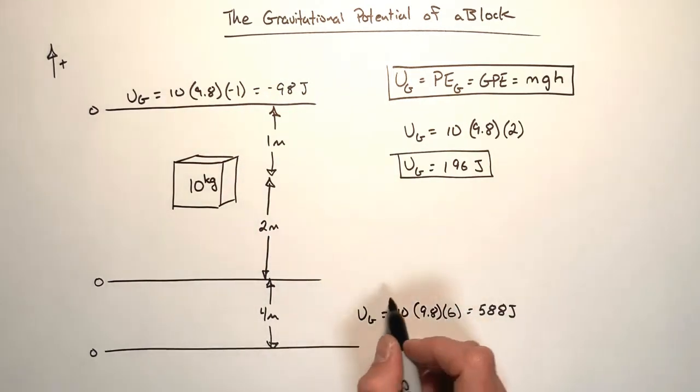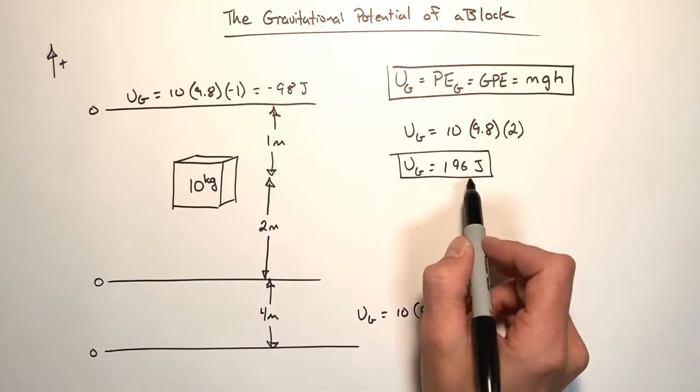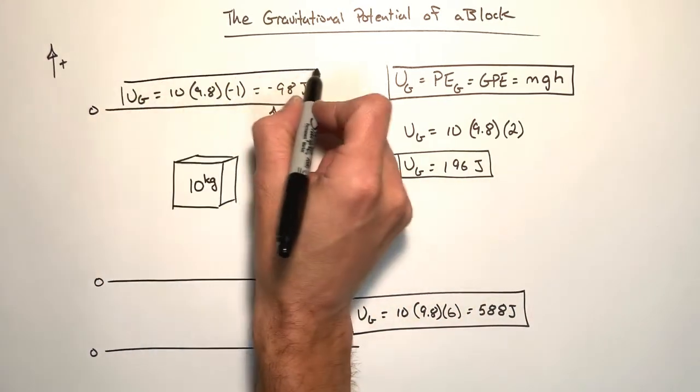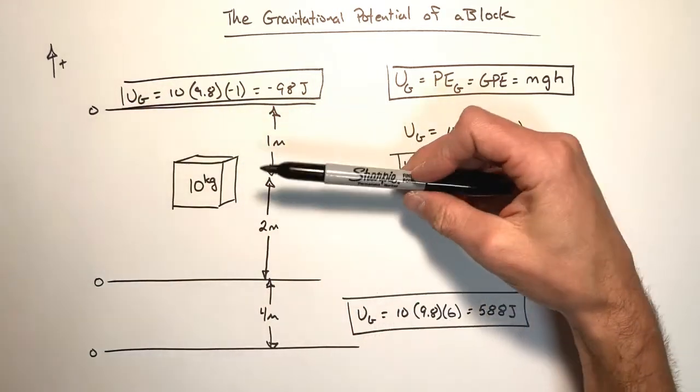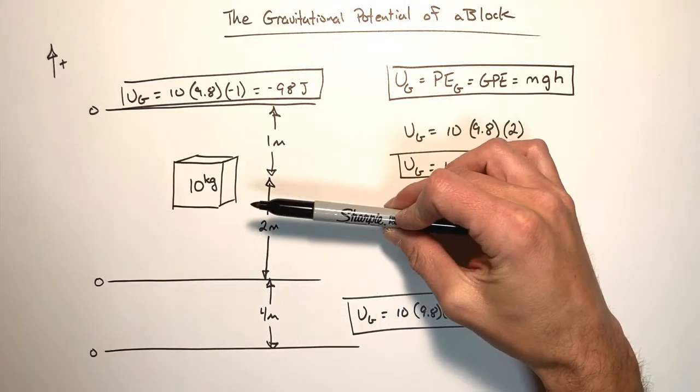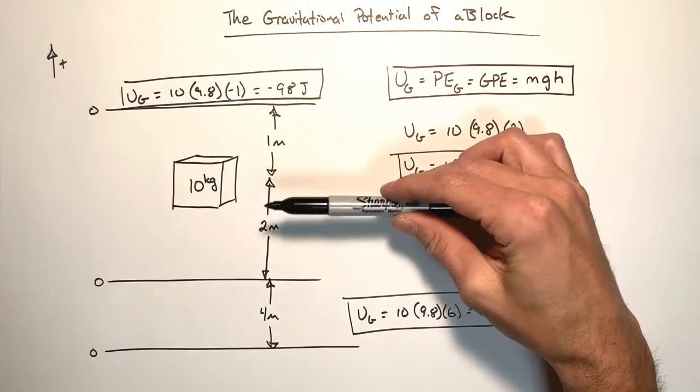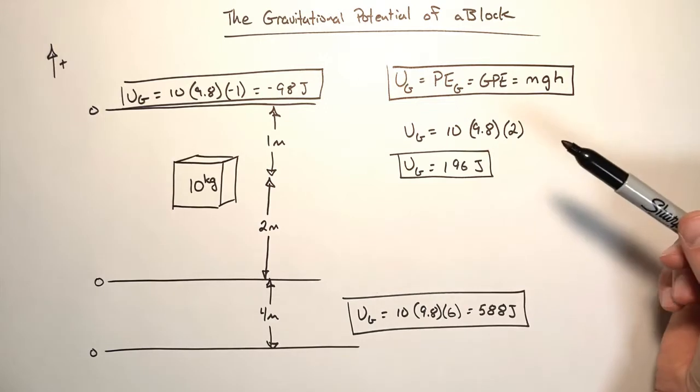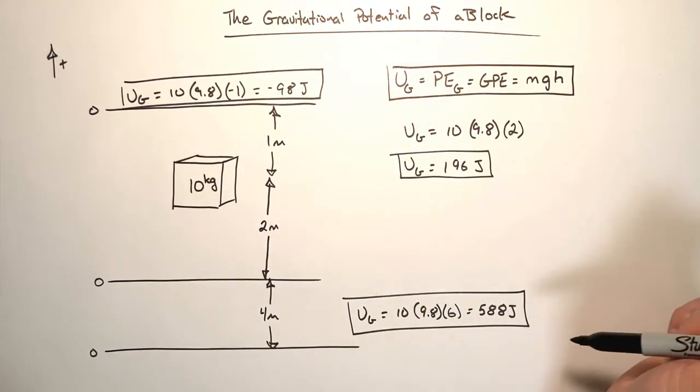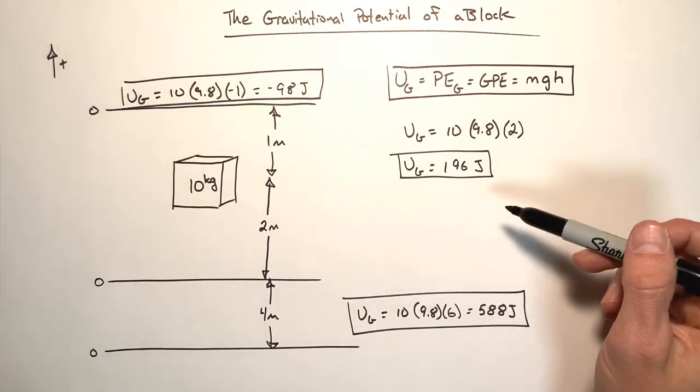And this presents an issue because we found the gravitational potential was 196. Then we found it was 588. Then we found it was negative 98. The fact of the matter is I could go through and actually choose any height I want to be a value of zero and get nearly any value I wanted for potential energy. So the question comes up, what's the right answer? Well, they're all the right answer.